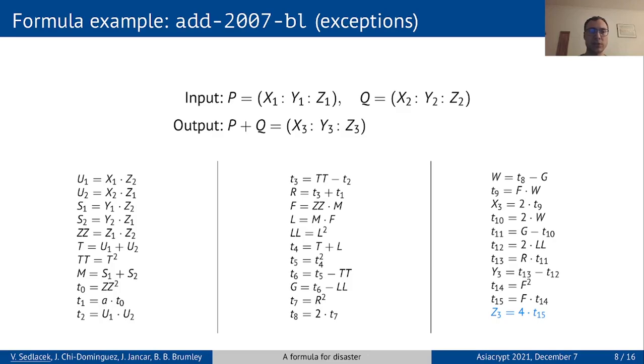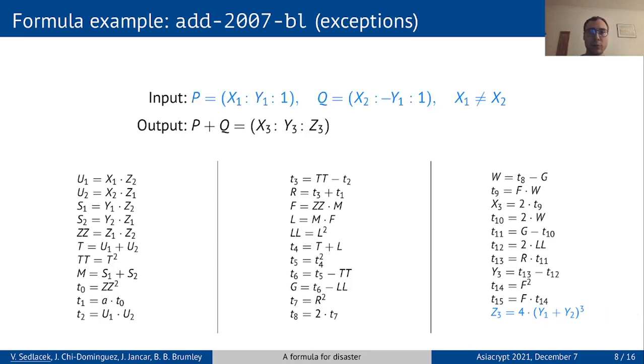So in this case, you can expand the z3 coordinate like this. And you can further simplify it by letting z1 and z2 equal 1, meaning both P and Q are affine points. And now you can see that when y2 equals minus y1, you really get a zero for z3.